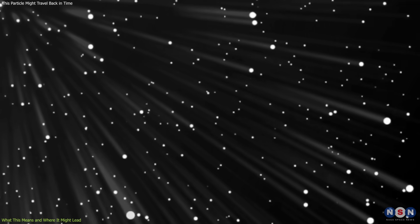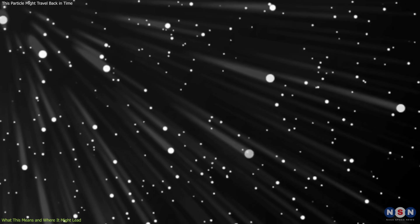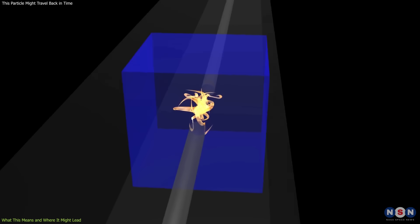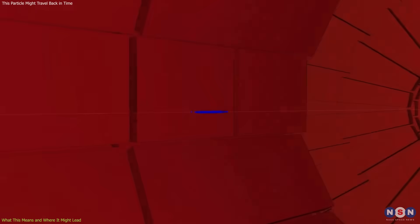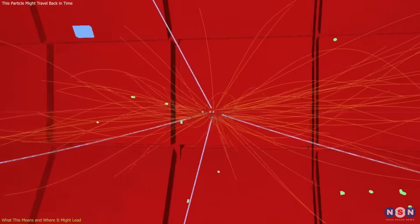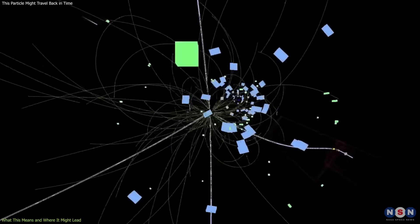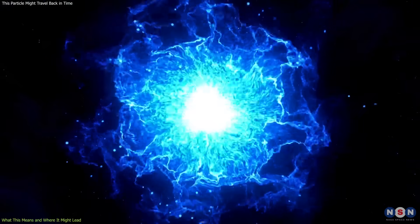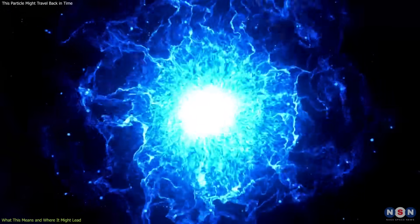That said, it provides a roadmap for how such particles might behave if they do exist, which could help shape future experiments. Indirect signatures, such as anomalies in high-energy particle collisions or unexplained energy losses, might now be interpretable under this framework.